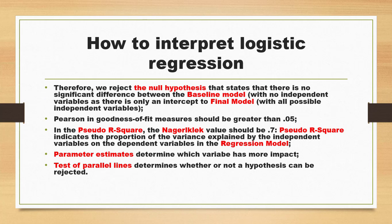When interpreting ordinal logistic regression results — which concerns us here since Likert scale is considered an ordinal measure — we reject the null hypothesis that there is no significant difference between the baseline model and the final model when the p-value is less than or equal to 0.05. The goodness of fit measures should be greater than 0.05, and in the pseudo R-square, the Nagelkerke value indicates the proportion of variance explained by the independent variables.